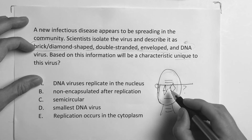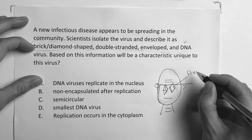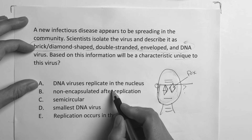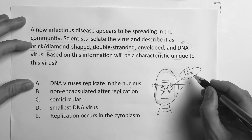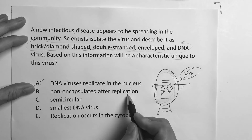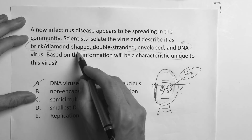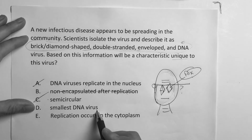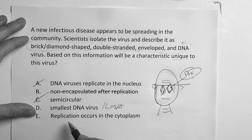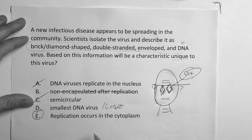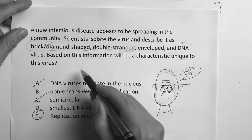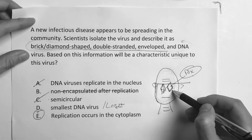Brick or diamond-shaped is going to be the pox virus. Now, what's unique about pox? DNA viruses replicate in the nucleus — all of them except pox virus. That's what's unique about pox: it replicates in the cytoplasm. So it's not non-encapsulated after replication — I just made that up. Semi-circular? No, they already told us it was brick or diamond-shaped. The smallest? No — actually it's the largest. Okay, that's unique — it's the largest DNA virus. Replication occurs in the cytoplasm? Yes. This is a nice two-step question that makes you understand what the virus is and know something extra about it.